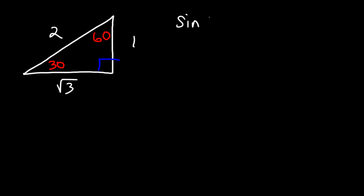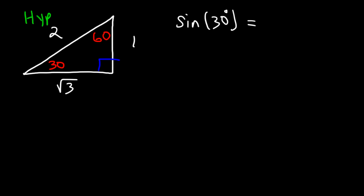Let's evaluate sine 30. Opposite to 30 is 1, and the hypotenuse is going to be 2. Sine theta is opposite over hypotenuse, so it's 1 over 2. Now, if we wish to find cosecant of 30, it's the reciprocal of sine. So if sine is 1/2, cosecant is 2 over 1, or simply 2.